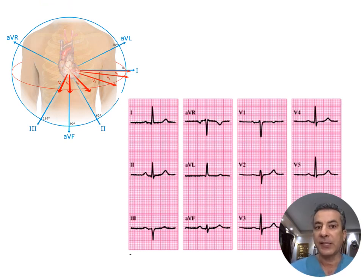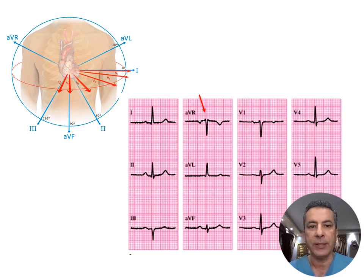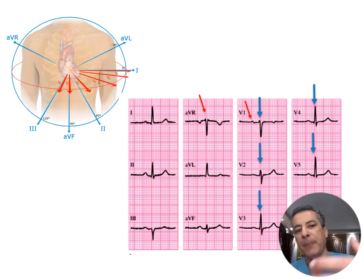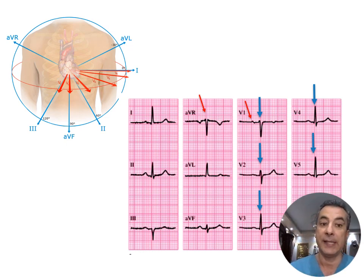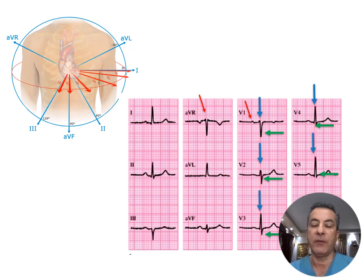There are distinctive features in the normal 12-lead recording. In lead aVR, all waves are inverted. The P wave in V1 is biphasic. In the precordial leads, the R wave of the QRS complex progressively increases in amplitude from V1 to V6. Similarly, the S wave in the precordial leads gradually diminishes from V1 to V5.